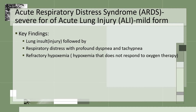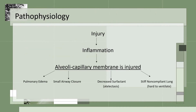Next we're going to talk about acute respiratory distress syndrome, or ARDS, also called acute lung injury. There is a lung injury followed by respiratory distress with profound dyspnea and tachypnea and refractory hypoxemia — hypoxemia that does not respond to oxygen therapy. The pathophysiology is: injury leads to inflammation, the alveolar-capillary membrane is injured, which results in pulmonary edema, small airway closure, decreased surfactant causing atelectasis, and then stiff non-compliant lungs that are very hard to ventilate.